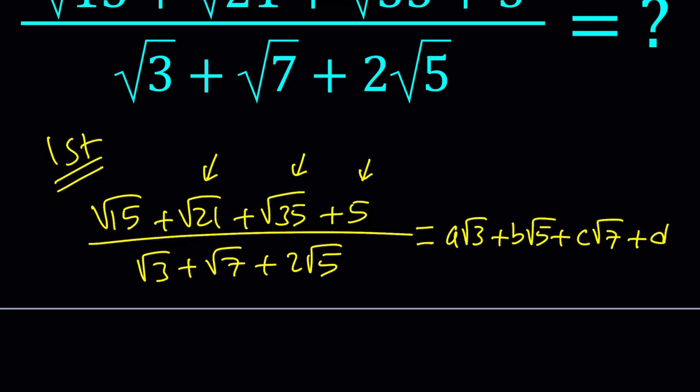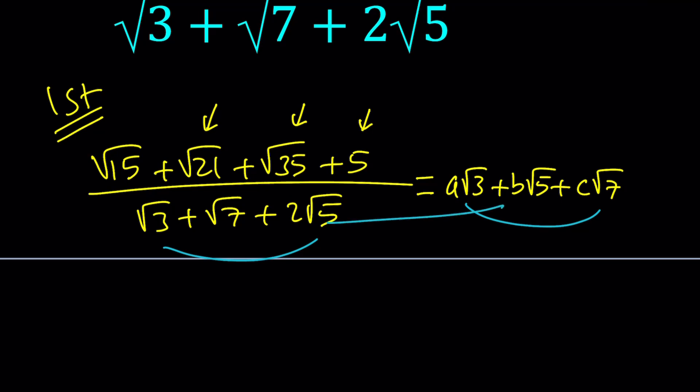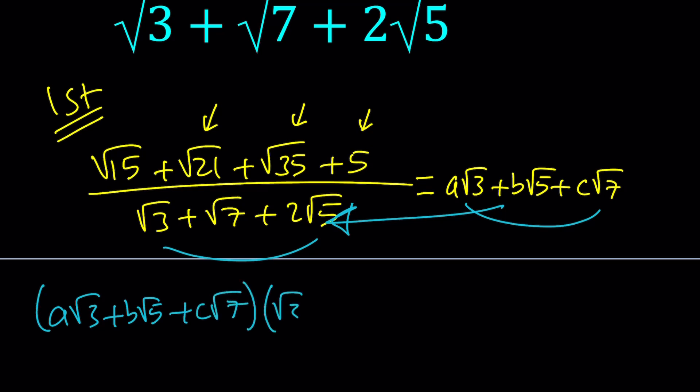Now, do we need d? We have a 5 which can be obtained by root 5 times root 5. By multiplying these terms we're able to get everything we need. If you multiply anything by an integer d you'd need root 3 or root 7 or root 5, but we don't have those, so d needs to be zero. Now we're going to go ahead and distribute — cross multiply — starting with a root 3 plus b root 5 plus c root 7, distributing over the denominator and combining like terms to equal the numerator.